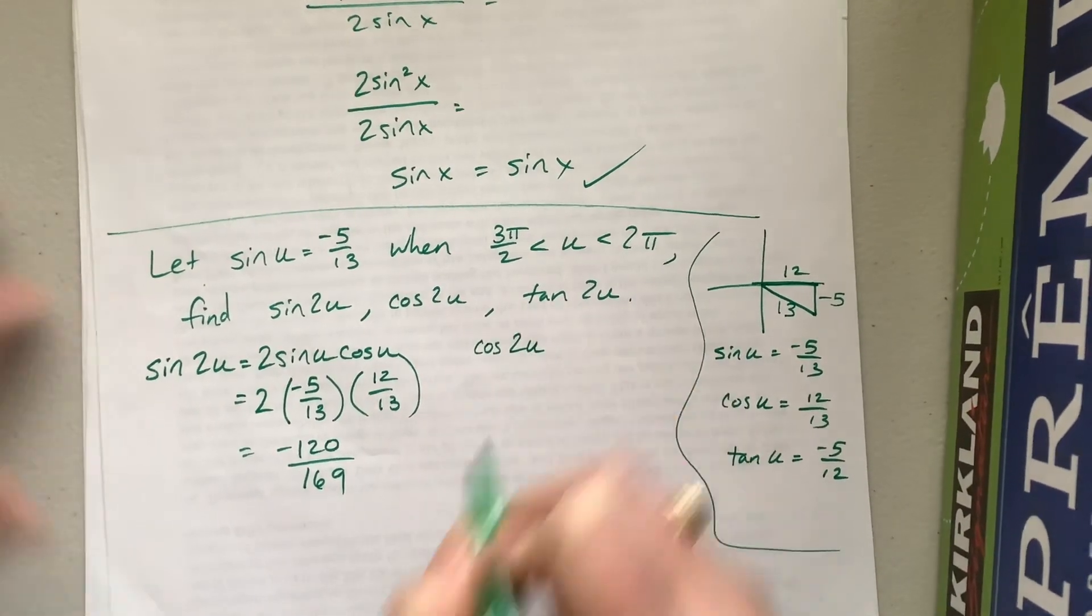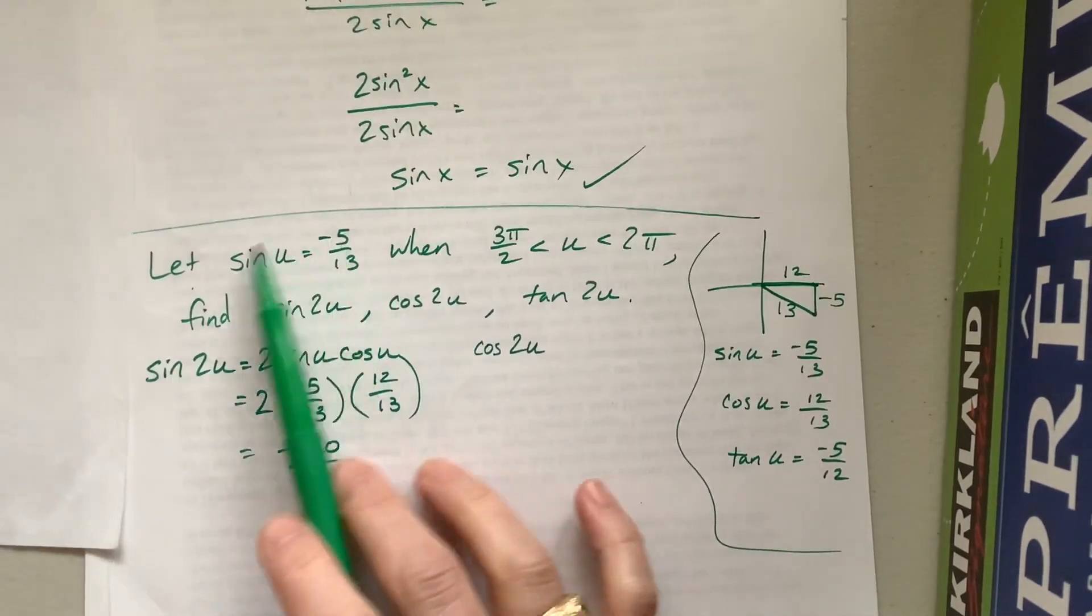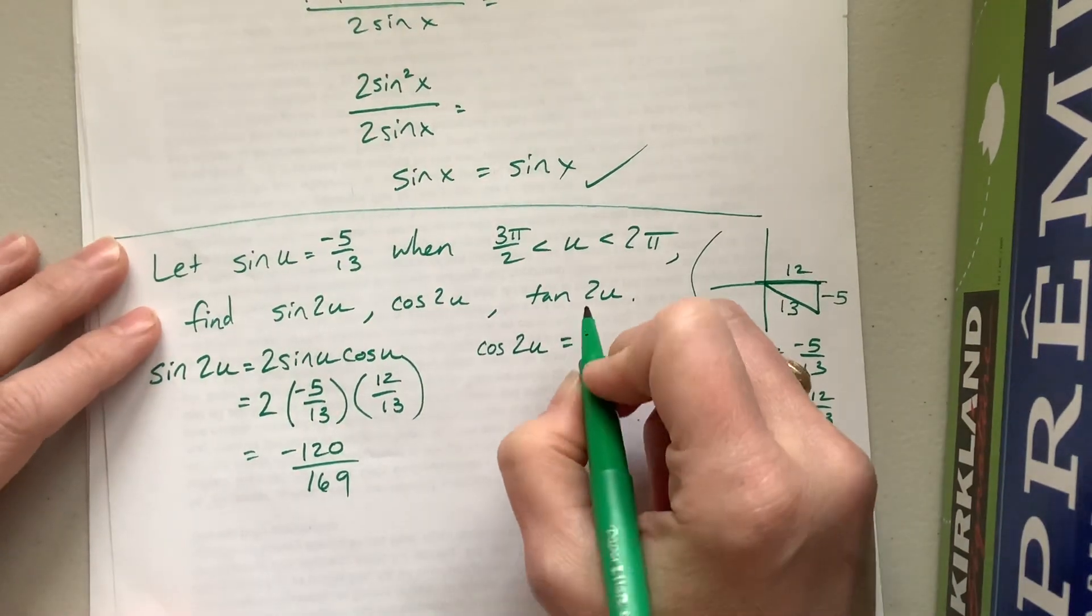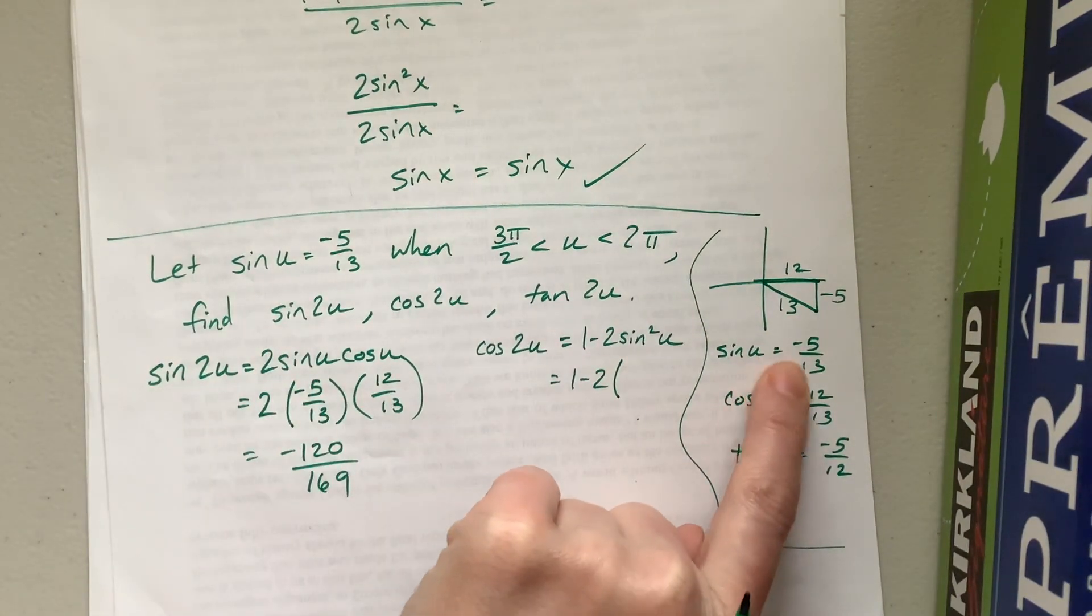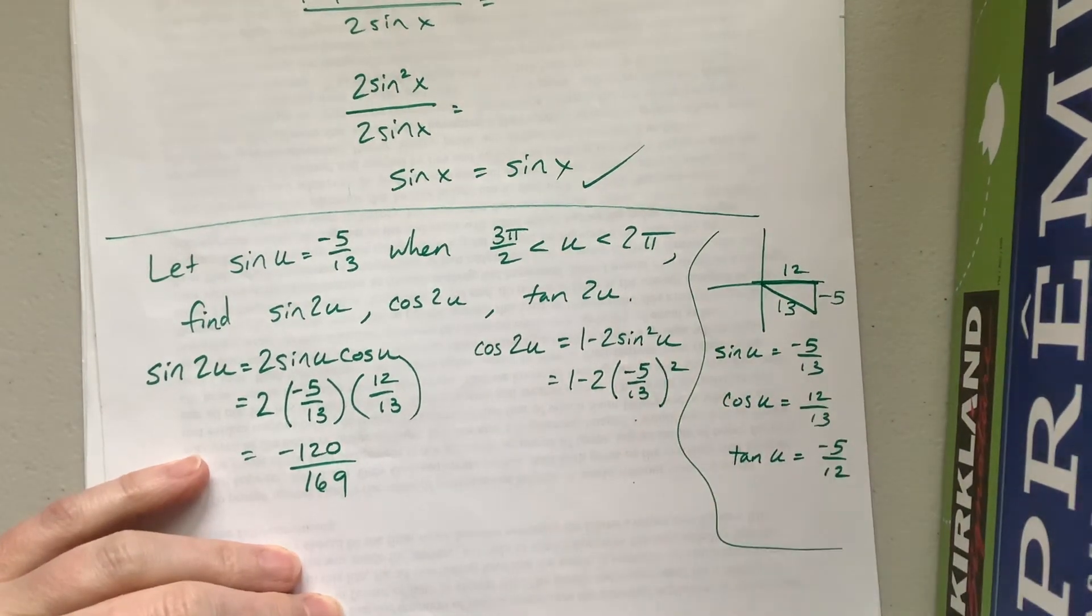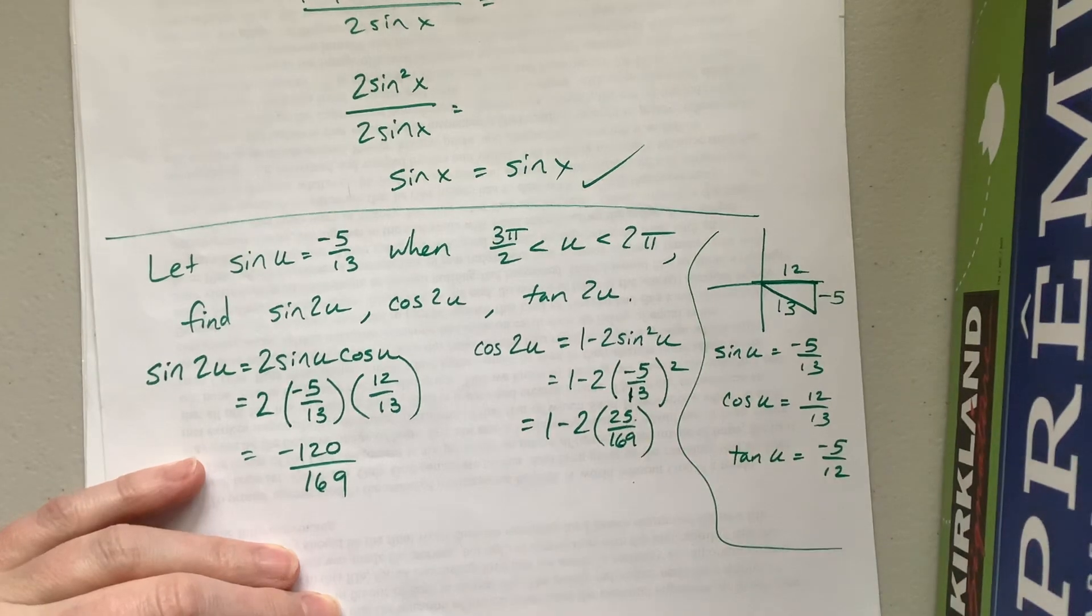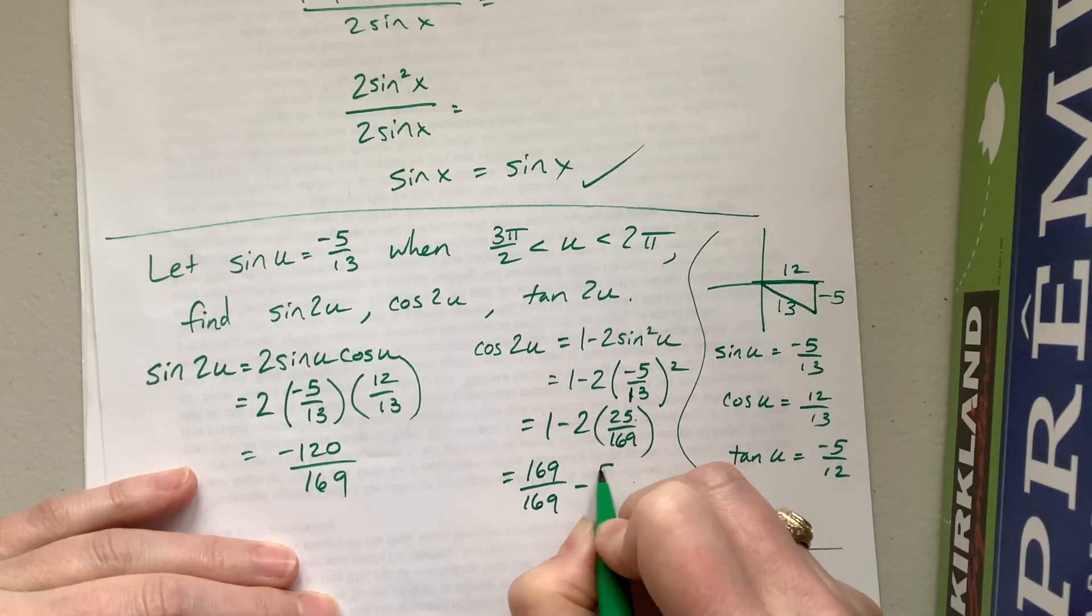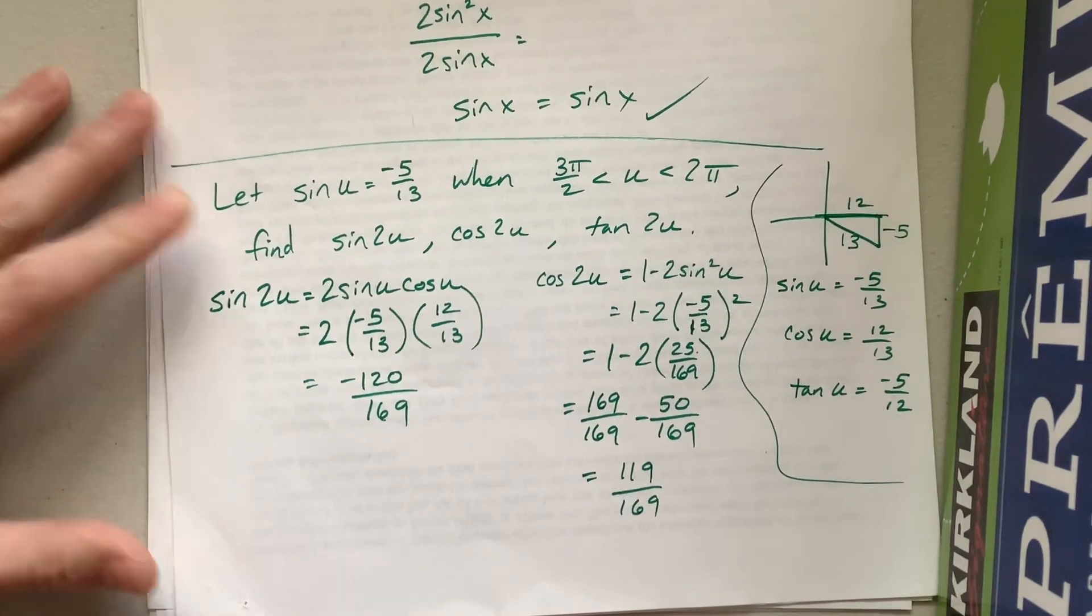Cosine of 2u. Cosine, I have choices, remember? I can pick 1, 2, or 3. I can pick anything that I want. What I might do is, because they told me sine, I might use the formula that already has sine in it, just in case I mess up somewhere. And so this is equal to 1 minus 2 sine squared u, which is 1 minus 2 times, sine of u is negative 5 over 13 squared. So this is 1 minus 2 times 25 over 169. This becomes, I'm too lazy to go find a calculator, I didn't bring one home. That might be problematic later. Minus, this is 50 over 169. So I got 119 over 169. Hopefully my arithmetic is good. If not, I'm sure somebody will tell me.